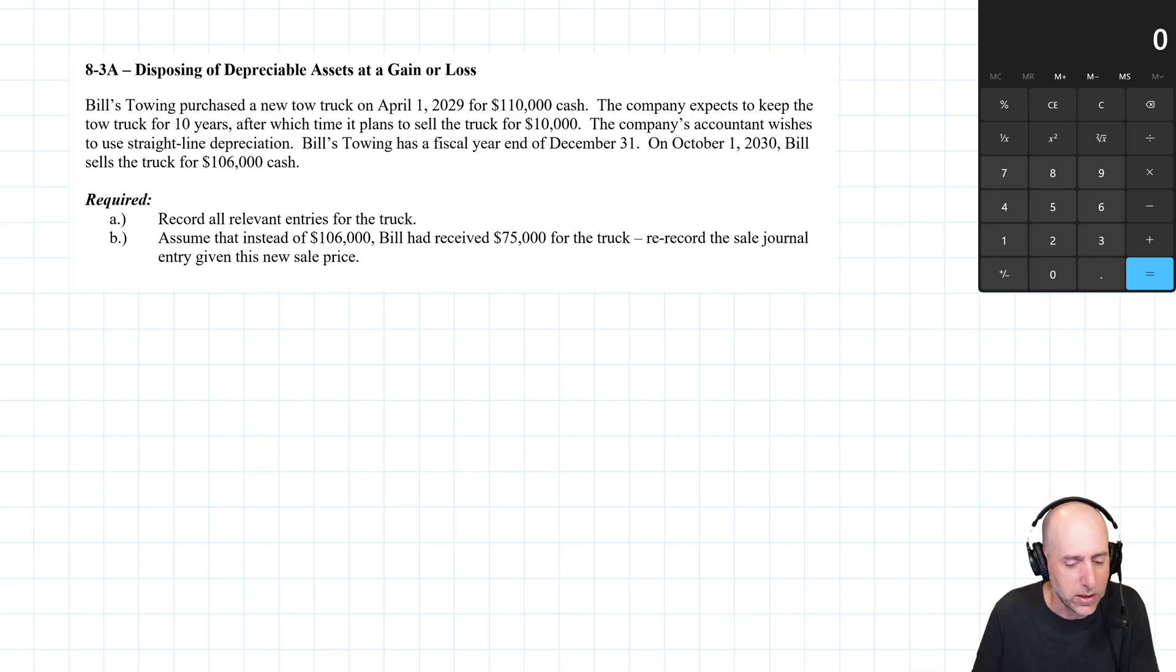Bill's Towing purchased a new tow truck on April 1st, 2029 for $110,000 cash. The company expects to keep the tow truck for 10 years, after which time it expects to sell the truck for $10,000. That's of course the residual value, salvage value in other terms. The company's accountant wishes to use straight line depreciation. Bill's Towing has a fiscal year end of December 31st. On October 1st, 2030, we thought we're gonna have the truck for 10 years, turns out we had it for like a year and a half. Bill sells the truck for $106,000.